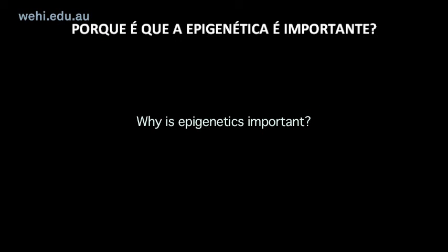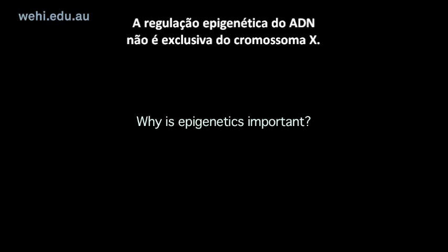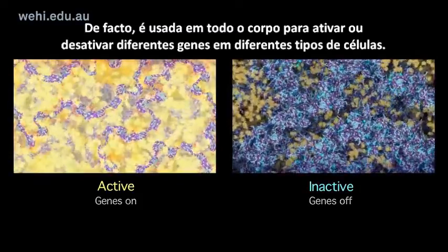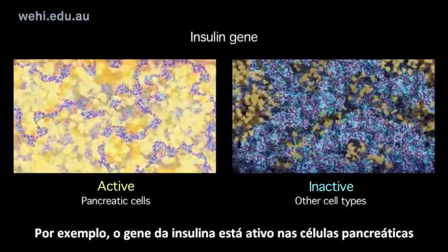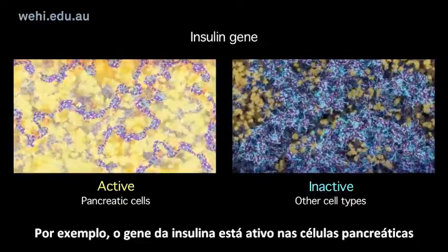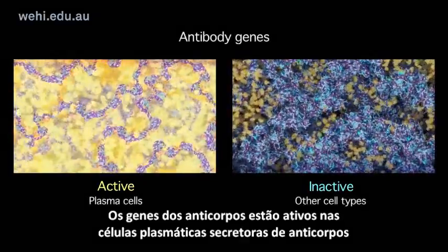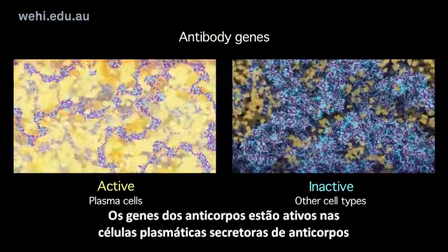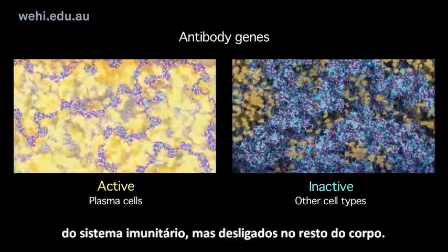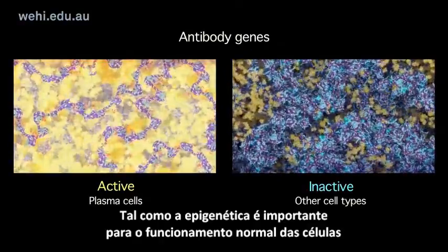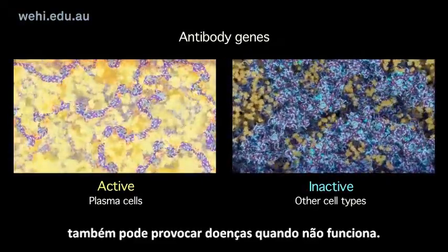Why is epigenetics important? The epigenetic regulation of DNA is not peculiar to the X chromosome. In fact, it is used throughout the body to turn different genes on or off in different cell types. For example, the insulin gene is switched on in pancreatic cells where insulin is made, but is inactive elsewhere in the body. Antibody genes are active in the antibody-secreting plasma cells of the immune system, but switched off elsewhere. And just as epigenetics is important for normal cell function, when things go wrong, it can lead to disease.